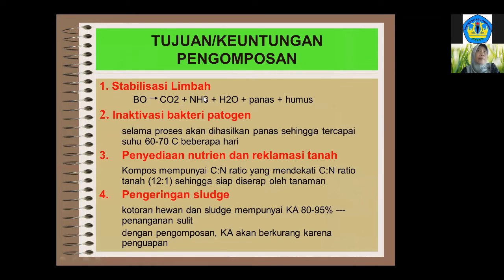Keuntungan pengomposan yang pertama adalah bisa menstabilkan limbah. Limbah atau sesuatu yang mati mengandung bahan organik, yang akan cenderung terurai menjadi senyawa-senyawa sederhana atau senyawa penyusunnya setelah mati, dan baru stabil. Di dalam proses pengomposan yang aerobik, yang dihasilkan adalah CO2, H2O, panas, dan humus. Humus ini mengandung nutrisi atau hara tanah yang bisa langsung diserap oleh tanaman. Sedangkan CO2 dan H2O-nya menguap, sehingga C/N rasio dari media kompos kemudian menurun setelah proses pengomposan.